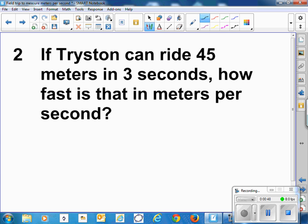If Tristan can ride 45 meters in 3 seconds, how fast is that in meters per second? 45 meters in 3 seconds. His rate is 15 meters per second. You just divide 45 by 3.